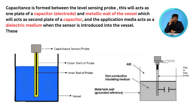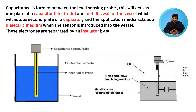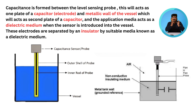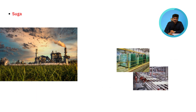The application media acts as a dielectric medium. When the sensor is introduced into the vessel, these electrodes are separated by a suitable media known as a dielectric medium. When the level of the process material rises, the value of the dielectric changes, which results in a change in the value of capacitance between the level sensing probe and the vessel wall. This change can be detected and measured by the capacitance level switch.